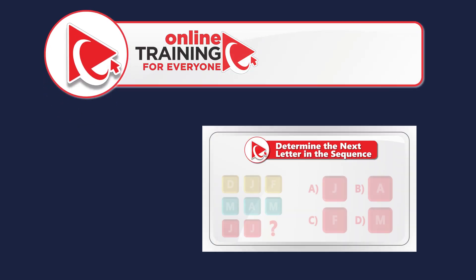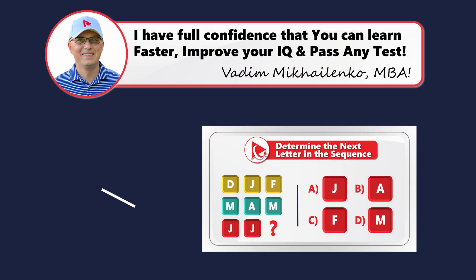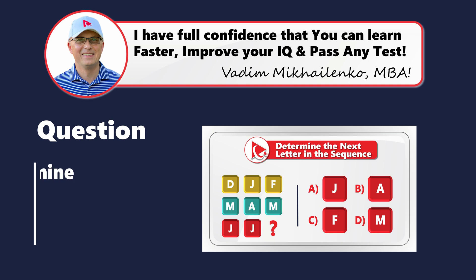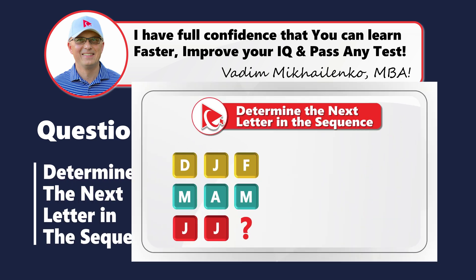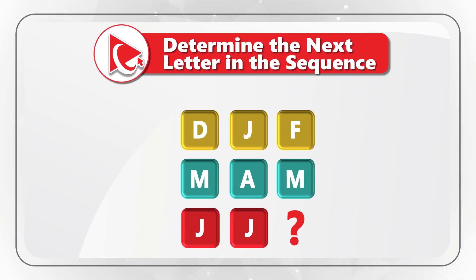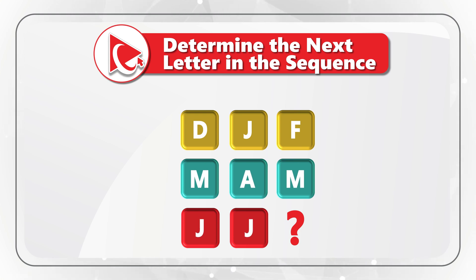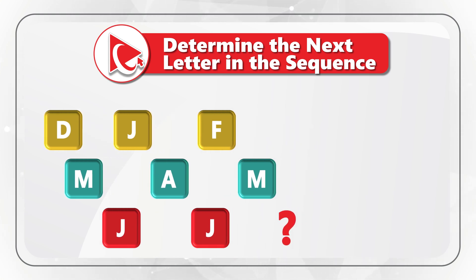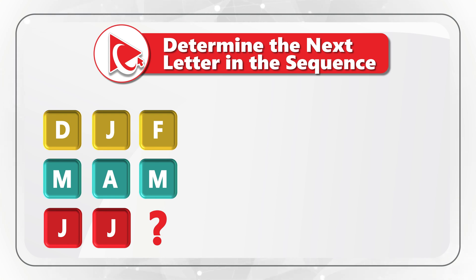Here's a question you will definitely enjoy solving. You are presented with eight letters and need to determine the next letter in the sequence. The letters are D, J, F, M, A, M, J, J — and then comes the missing letter, which you need to select out of four possible choices.